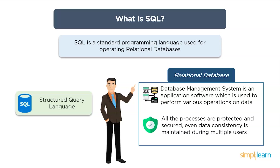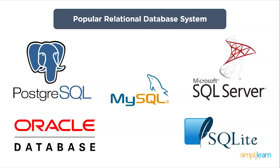A database is a set of data stored in a computer, usually structured in a way that makes it easily accessible. A relational database is a type of database that uses a structure allowing us to identify and access data in relation to another piece of data. Often data in a relational database is organized into tables. A relational database management system (RDBMS) is a program that allows you to create, update, and administer a relational database. Most RDBMS use the SQL language to access the database, though SQL syntax may differ slightly depending on which RDBMS you are using.